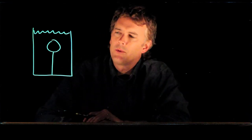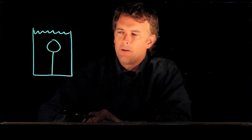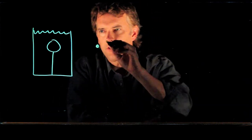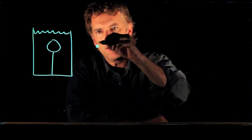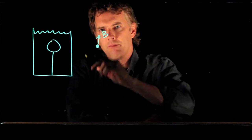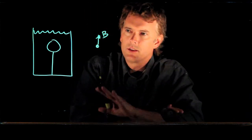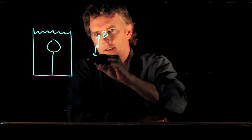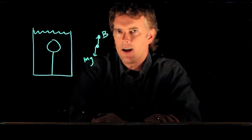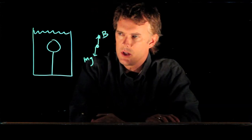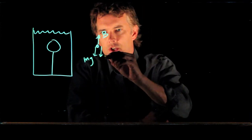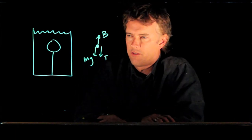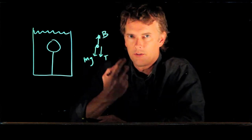So how do we attack this problem? Well, first off, let's draw a free body diagram. Here's our object. We have a buoyant force B going up on the object. We of course have gravity going down, mg. And we have tension T in the string also going down.